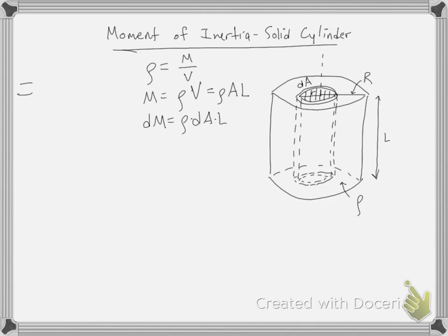And so again, since this is a continuous mass distribution, we have integral r squared dM. And this is where solving for differential mass in terms of dA is helpful. So now we can plug this in r squared times rho. I'm going to put L on this side and dA over there.